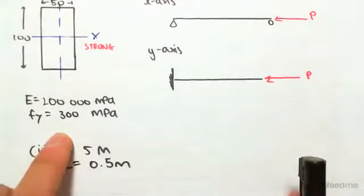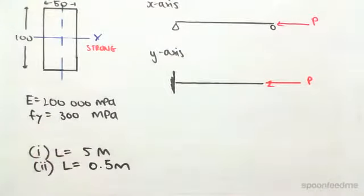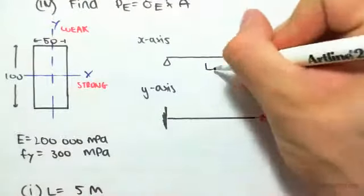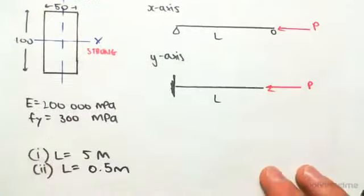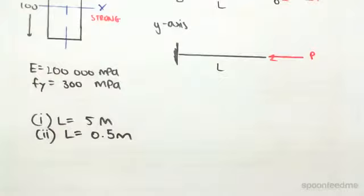So e is 200,000 MPa, fy is 300 MPa. We're going to be doing this problem such that l, so this l is 5 meters or 0.5 meters. We're going to do 5 meters first.